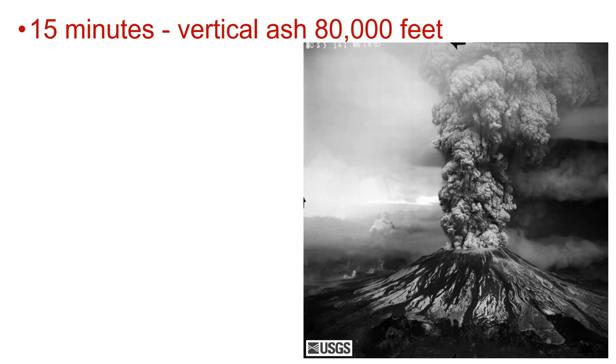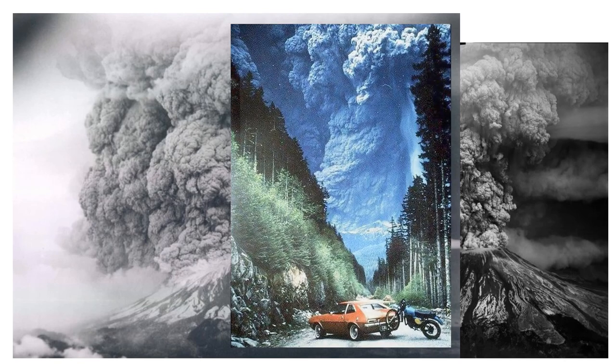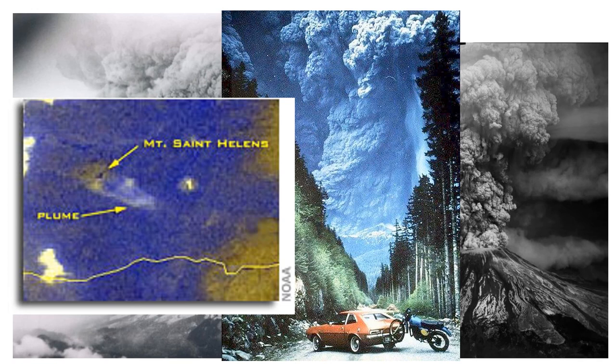After 15 minutes, the vertical ash had reached over 80,000 feet — quite an incredible picture. Here's another picture from a photographer. These people stopped their car, got out and took a picture. It is awesome — can you imagine being there? Here's a satellite picture taken from outer space showing Mount St. Helens and the plume of smoke slowly traveling across the United States.